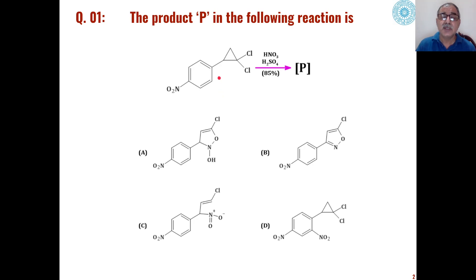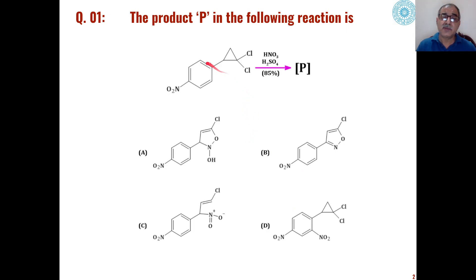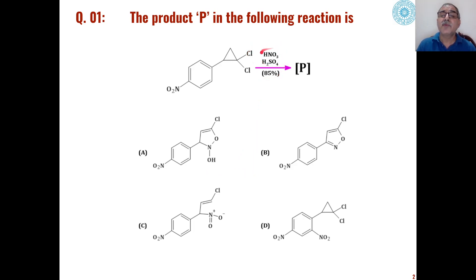The first problem involves cyclopropane derivatives containing an aromatic ring and alpha-alpha-dichloro substitutions. When reacted under acidic conditions — nitric acid and sulfuric acid — what will be the product out of the four choices given? We need to determine whether nitration will take place on the aromatic ring or some other reaction will take place on the cyclopropane ring, depending upon the type of reagent being used.